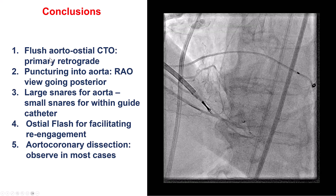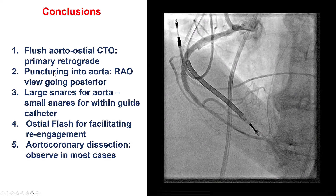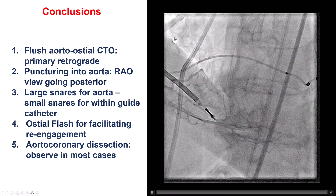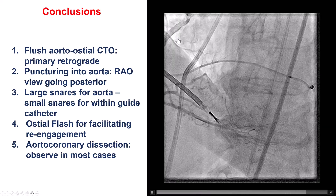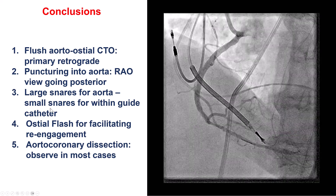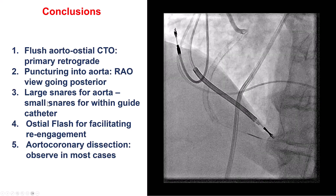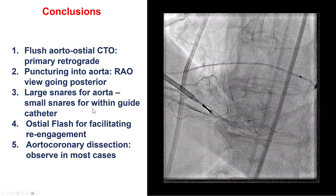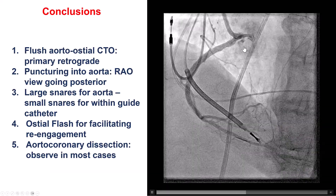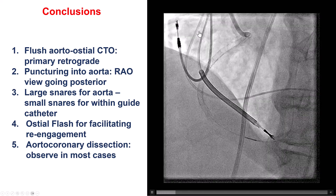Several lessons from this case. The first is that when there is a flush aortoostial CTO, there's no other way to succeed in recanalizing this unless one goes retrograde. Puncturing into the aorta from the retrograde approach can be challenging. A very useful view is the RAO view — we want to see the wire go posteriorly; if it goes anteriorly, that is likely to end up into the pulmonary artery. In this case, using a Confianza Pro 12, we exited into the aorta and then used large snares to externalize the wire. The wire came off the snare, so we used a smaller 2x4 ensnare to capture the wire within the guide catheter. Engagement was very challenging, so we used the ostial flush balloon to make the ostial part of the stent well-opposed and facilitate re-engagement in the future. We did have a small aortocoronary dissection, which is something to observe and typically resolves within a few weeks.